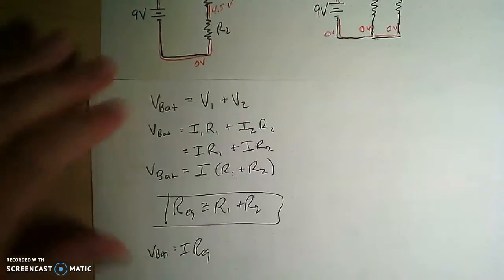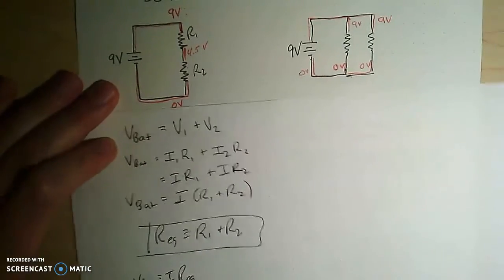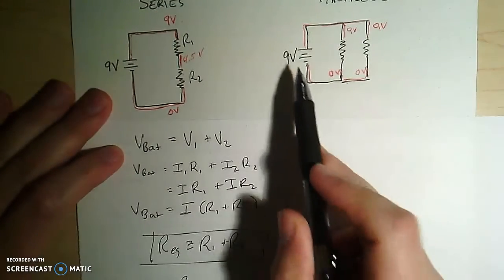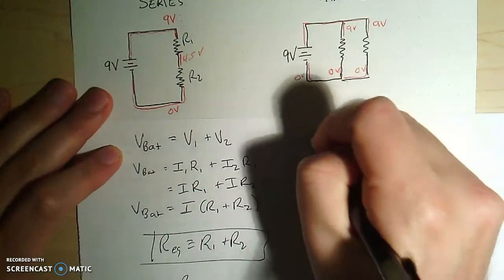So that's why it makes sense in a series circuit. Okay, what's different in parallel circuit? Well, in a parallel circuit, every element gets the full voltage of the battery.